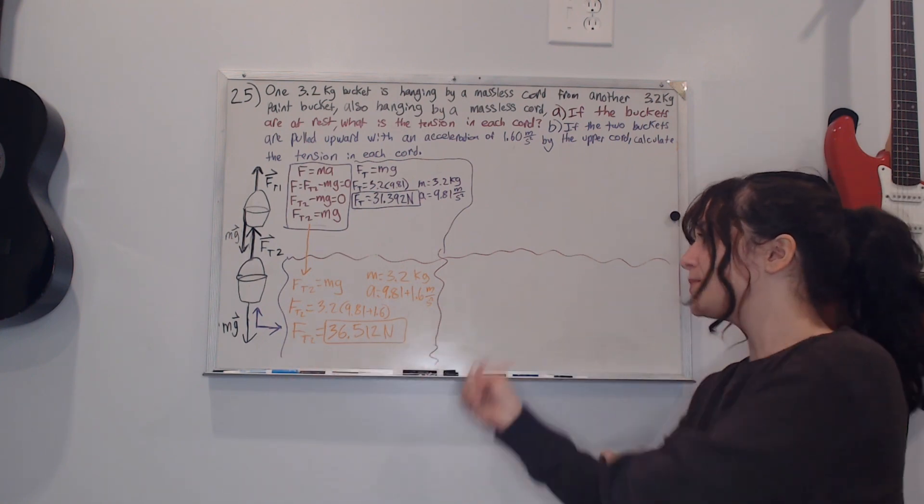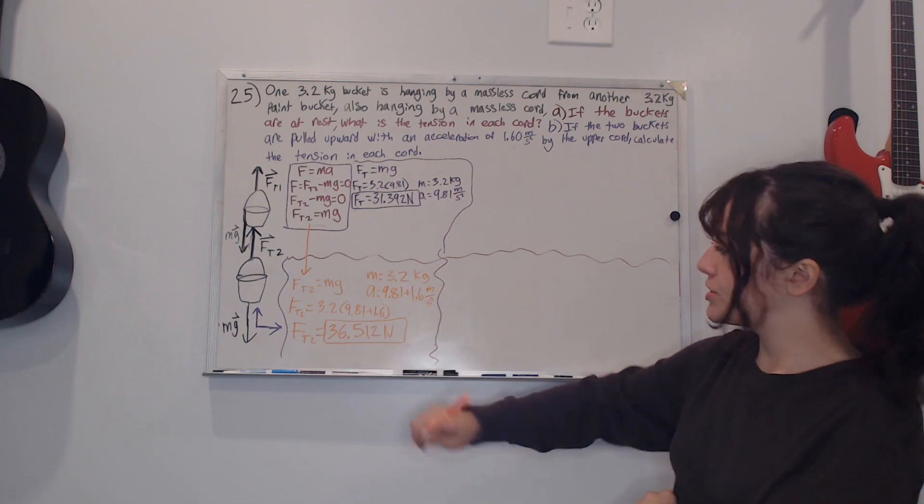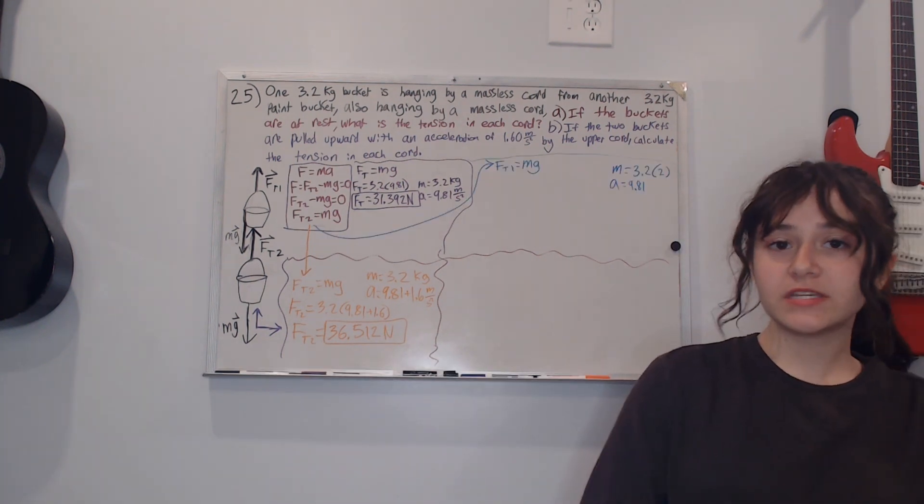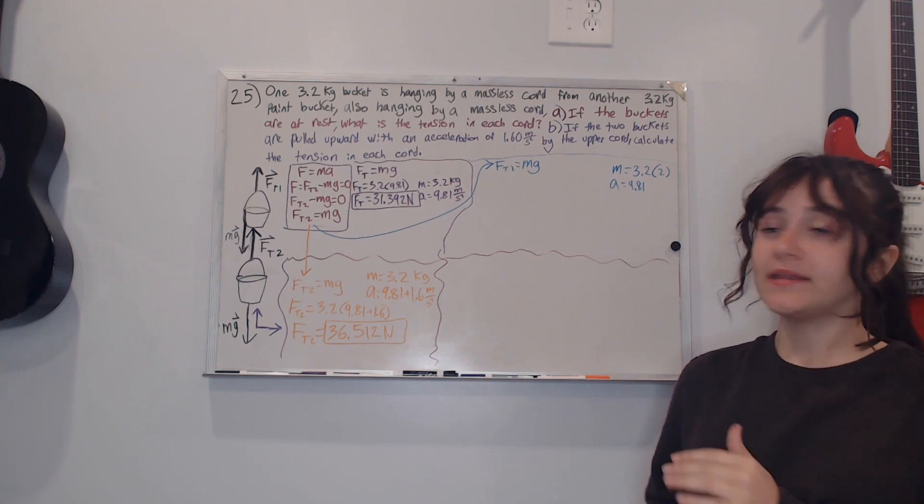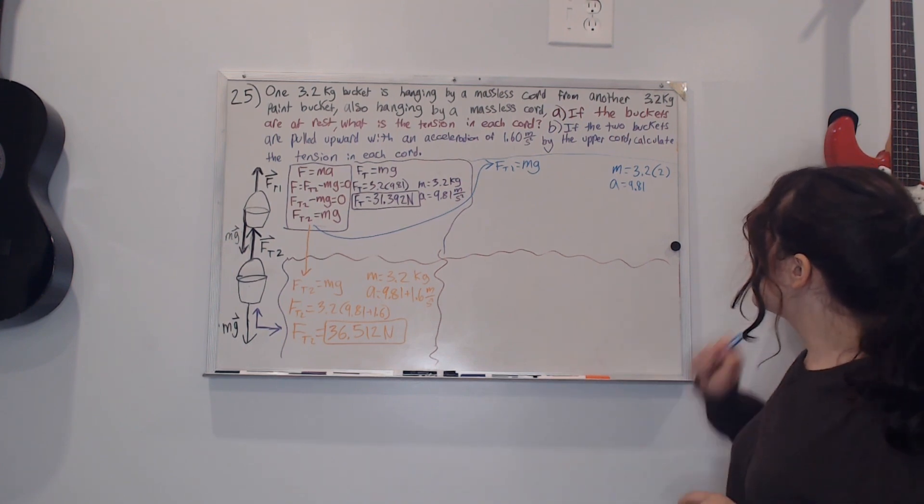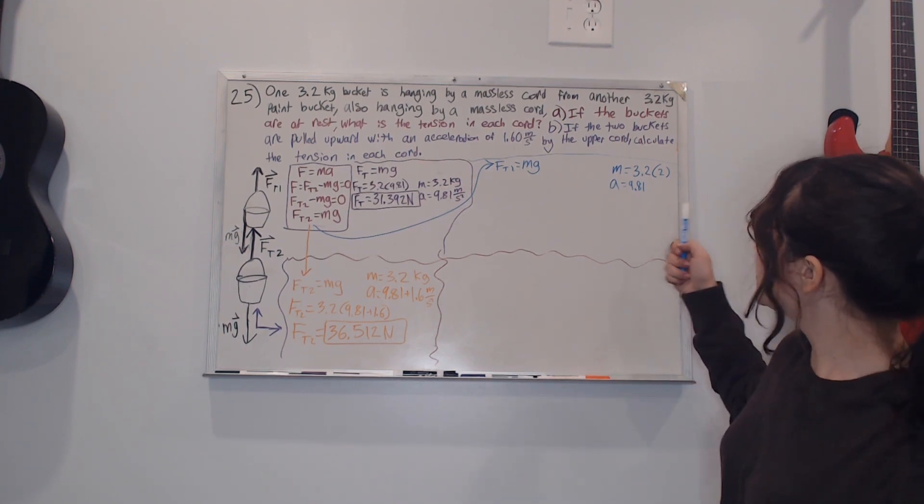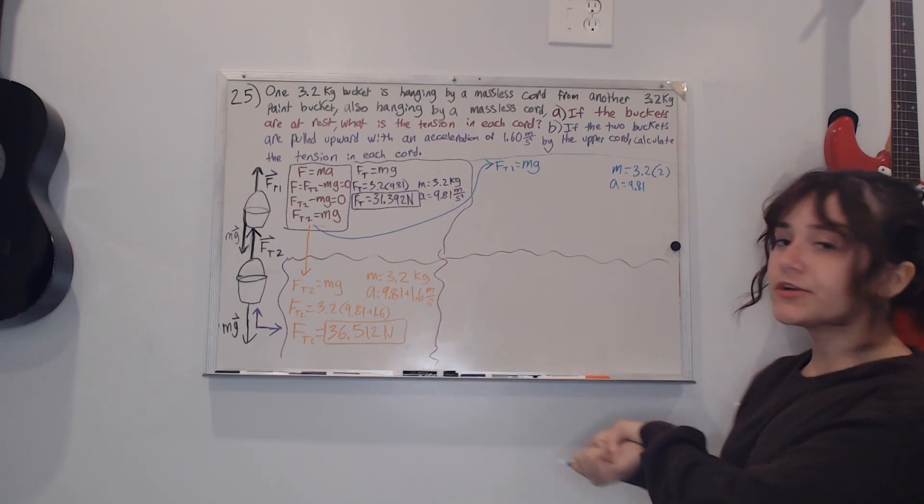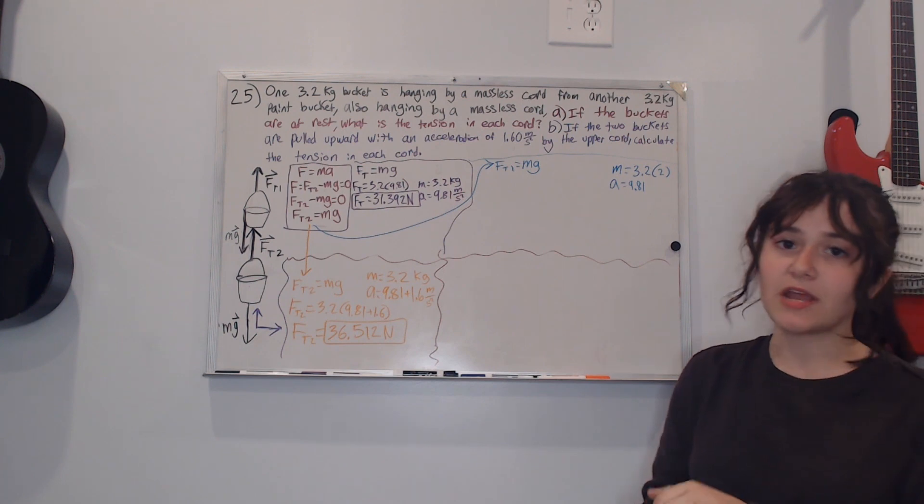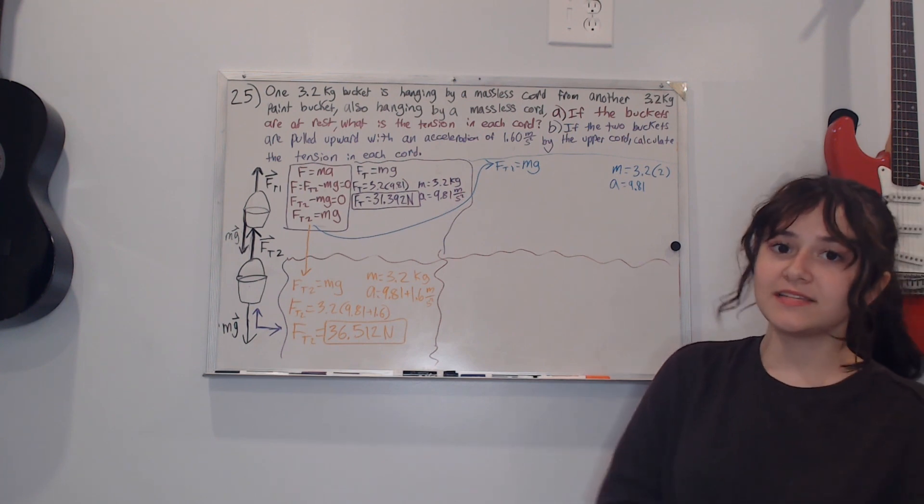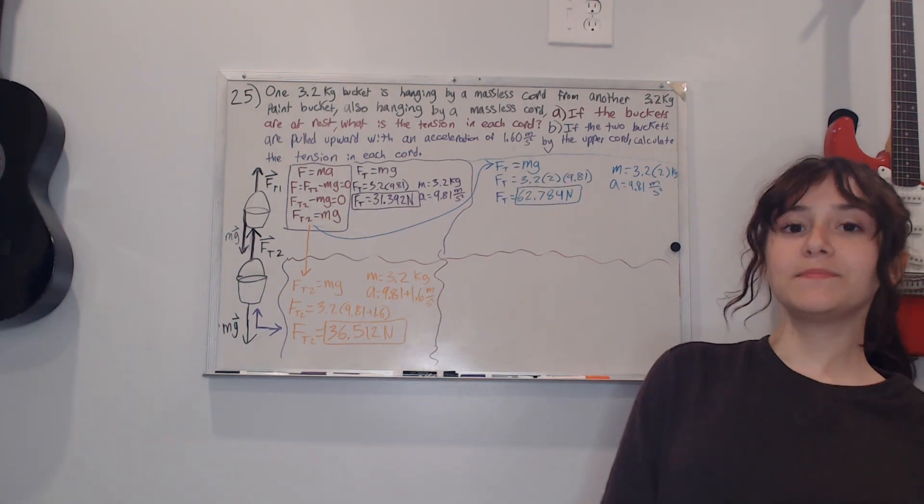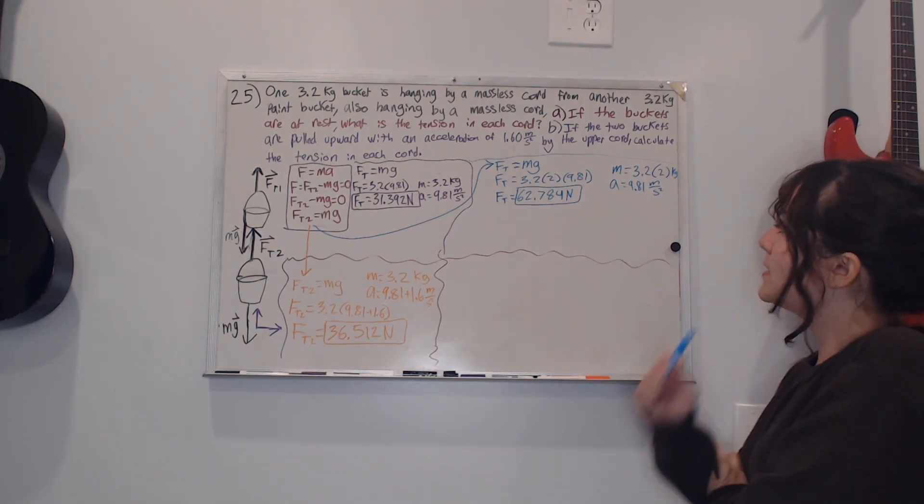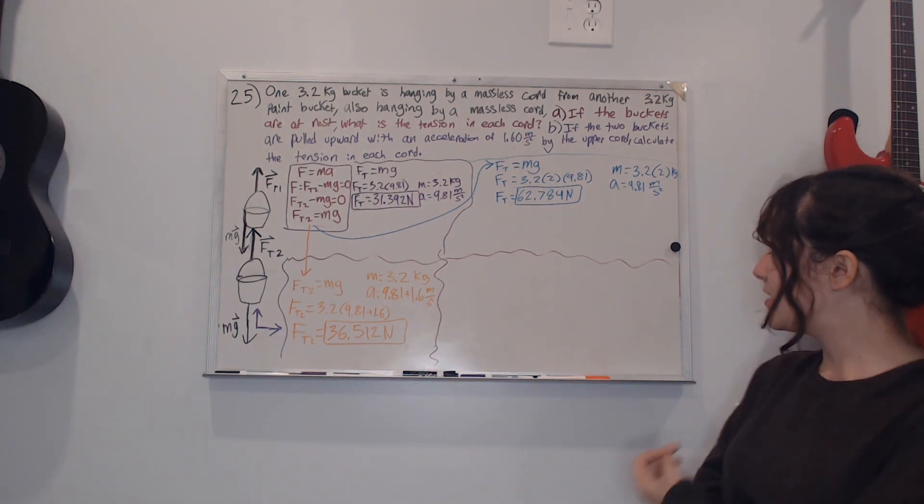Now I'm focusing on the tension with the other rope and it's at rest, so our mass would be 3.2 times 2 since it's both of the buckets, and then our acceleration is 9.81 since it's just at rest and gravity is acting on the buckets. After plugging that into my calculator I get the tension of the rope being 62.784 newtons.